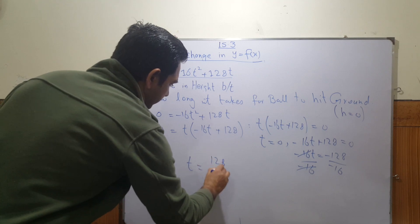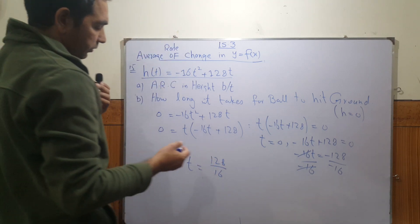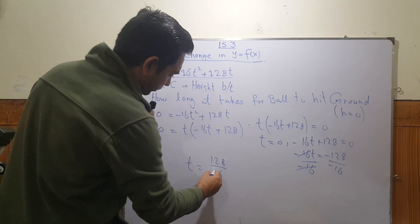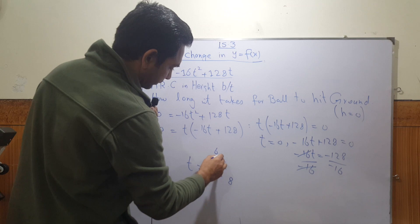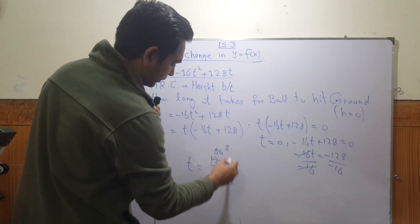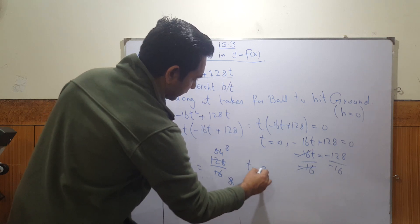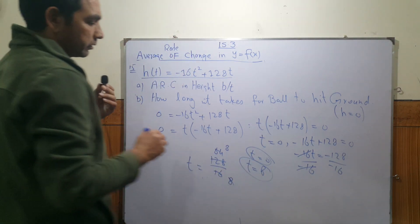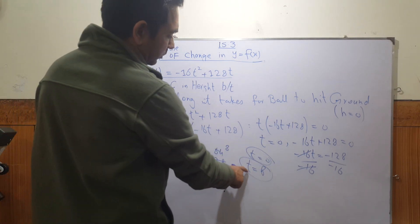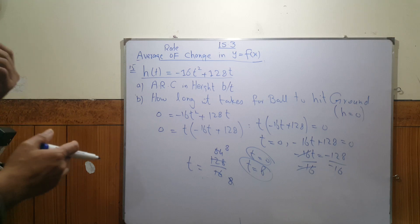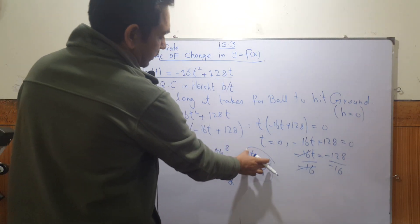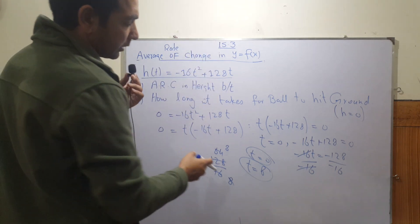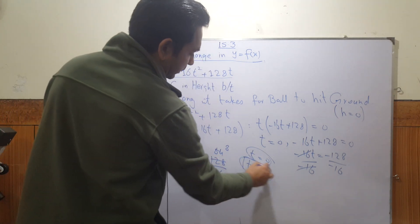Solving -16t + 128 = 0: move -16t to the other side and divide both sides by -16. This gives t = 128/16 = 8. So the two solutions are t = 0 or t = 8. Since t = 0 means the ball hasn't started yet, the ball hits the ground at t = 8 seconds.